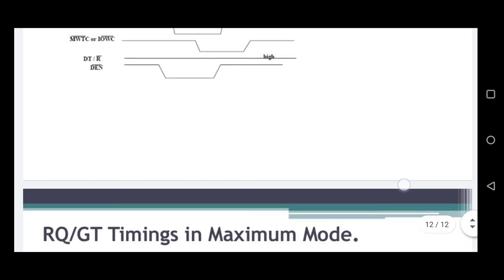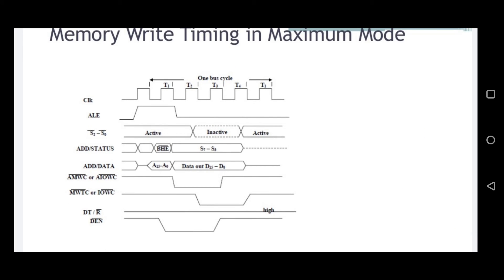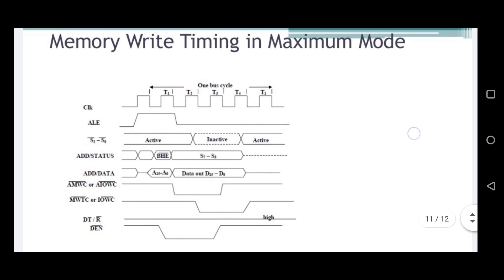Next is the memory write timing in maximum mode — the write timing cycle is an output operation, similar to the previous one. The write timing diagram shows the advanced command signals AMWC (advanced memory write command) and AIOWC (advanced I/O write command), which are low signals during T2 to T4. Data transmit/receive is high in the write cycle. Data enable is active during T2 to T4.